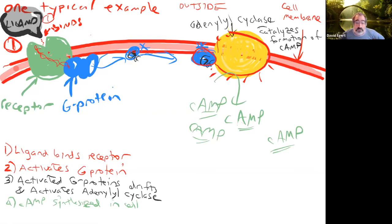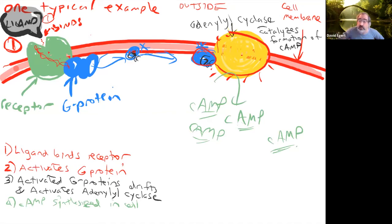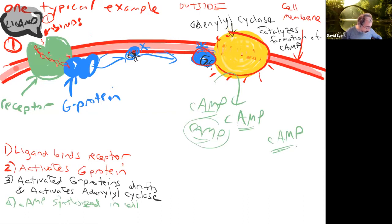Cyclic AMP is building up — now it has to do something. There are lots of different options at this step, but a typical thing is that cyclic AMP activates protein kinase A.